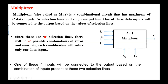A multiplexer has many inputs and one output. Usually the number of inputs in a multiplexer and the number of outputs in a demultiplexer are a power of 2. For example, we have 4-to-1 multiplexer, 8-to-1 multiplexer, 16-to-1 multiplexer, etc.